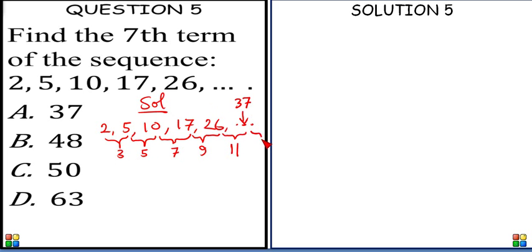And then for the next one again, there will be a difference of 13. You know, odd numbers. So 37 again plus 13 is going to be 50.